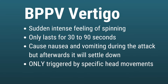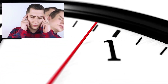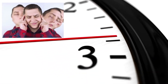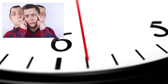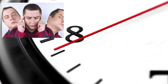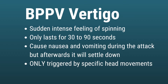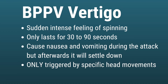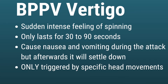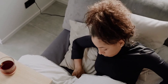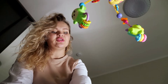Vertigo attacks from BPPV are a sudden intense feeling of spinning that only lasts for about 30 to 90 seconds. It can cause nausea and vomiting during the attack, but afterwards it'll settle down and you'll feel fine until another attack is triggered. BPPV attacks are only triggered by specific head movements that cause the particles in the inner ear to move, including getting into and out of bed, rolling over in bed, and looking up or down.